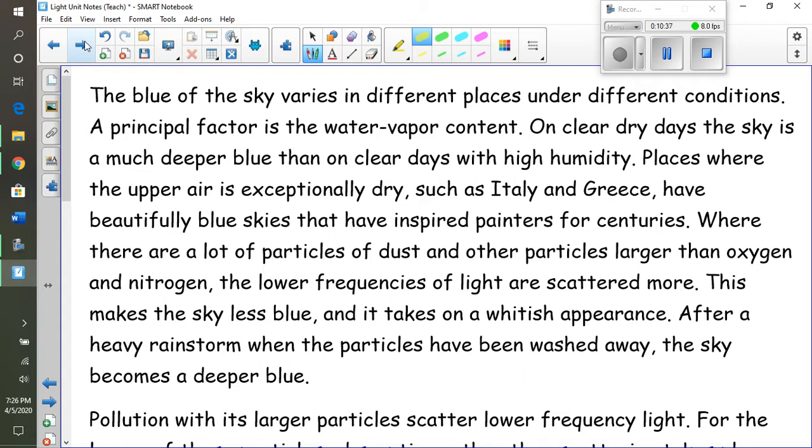The blue sky varies in different places under different conditions. A principal factor is the water vapor content. On a clear, dry day, the sky is much deeper blue than on clear days with high humidity. Places in the upper atmosphere where it's extremely dry, like Italy and Greece, have beautiful blue skies that have inspired painters for centuries. Where there are a lot of particles of dust and other particles larger than oxygen and nitrogen, the lower frequencies are scattered more. This makes the sky less blue and it takes on more of a whitish appearance. After a heavy rainstorm, when the particles have been washed away, the sky becomes a deeper blue.